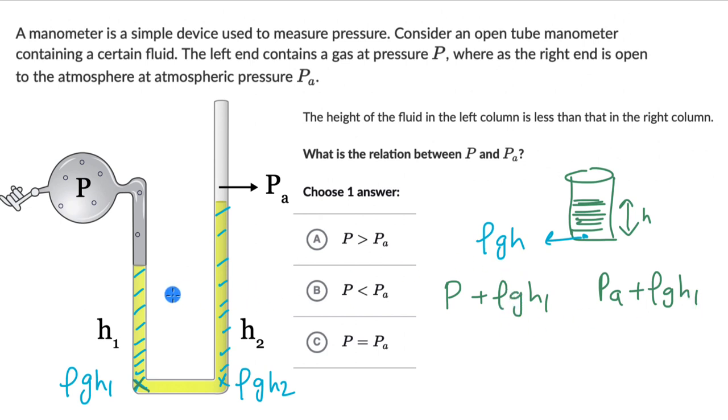And this fluid is at rest, which means that these two points must be at the same pressure. Because if they aren't at the same pressure, then let's say if this part was at a higher pressure than this point, then the fluid would move, it would flow towards right.